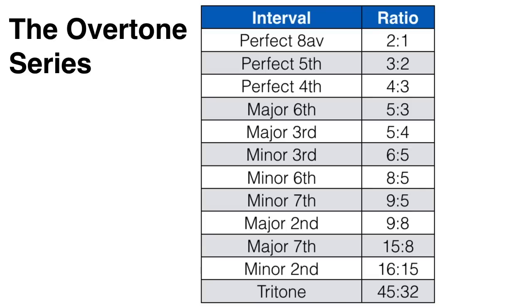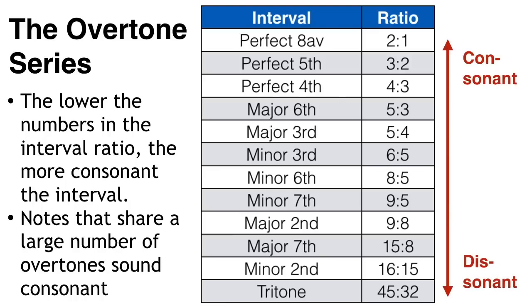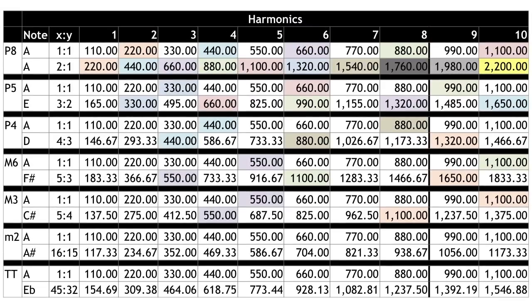Now another interesting thing about the overtone series is that it determines whether an interval sounds consonant or dissonant. The lower the numbers in the interval ratio, the more consonant or pleasant the interval will sound. So a perfect octave of 2 over 1 or a perfect fifth of 3 over 2 will sound more consonant and more pleasant than a tritone of 45 over 32. Another way of saying this is that notes that share a large number of overtones sound consonant, while notes that do not share any overtones sound dissonant. So the more harmonics in common and the lower those harmonics, the more consonant the interval will sound.